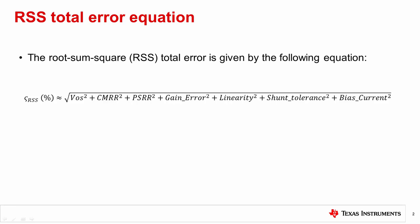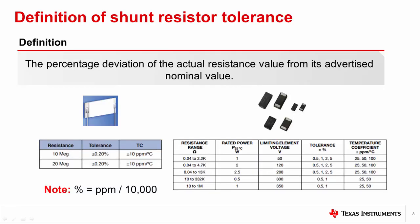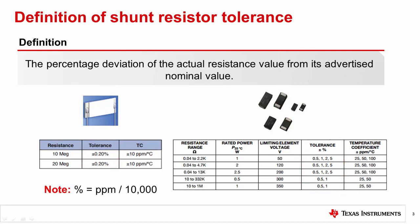Its effect on system performance bears the same characteristics of gain error on the current sense amplifier itself. Shunt resistor tolerance is defined by the shunt resistor manufacturer and can be found on the product data sheets for resistors. It is usually specified in percent. A 5% shunt can be up to 5% from its ideal value, directly contributing up to 5% error to the gain error of the system.